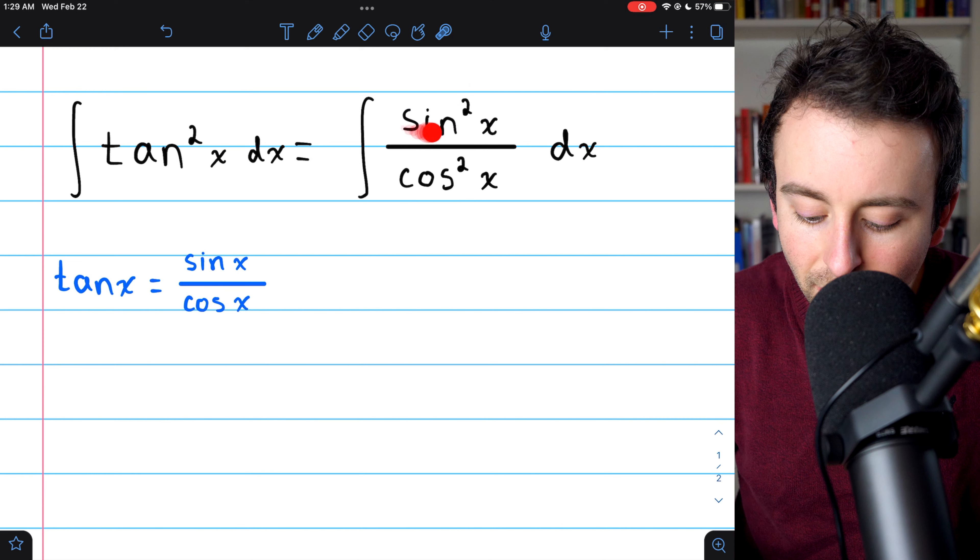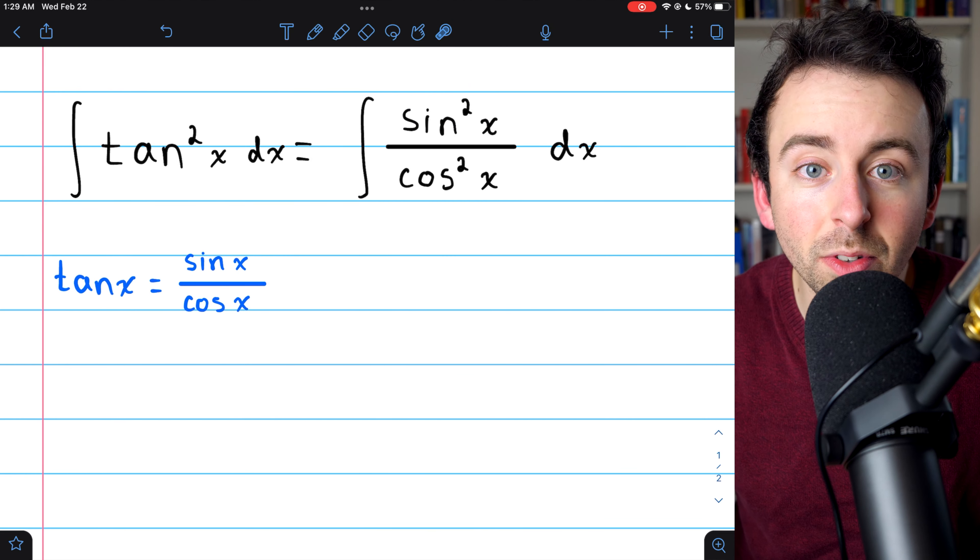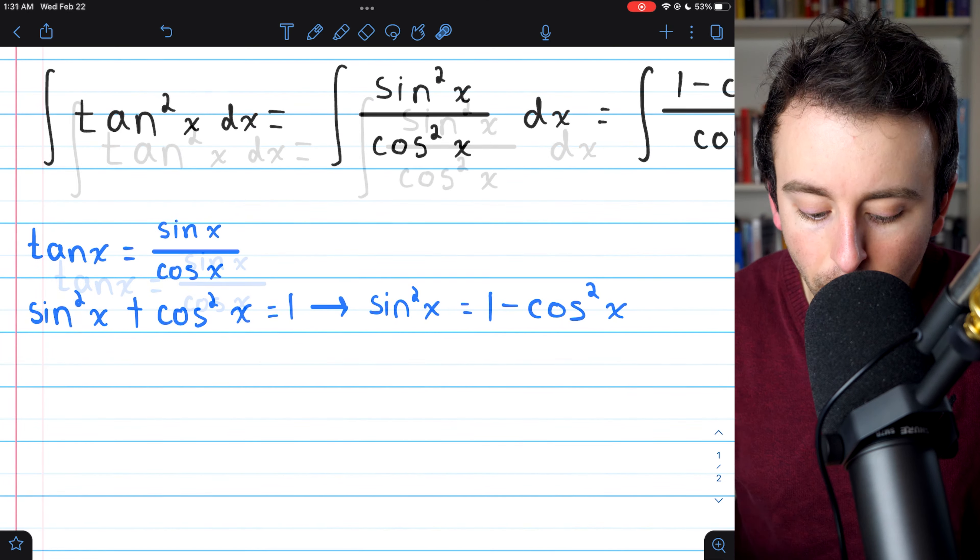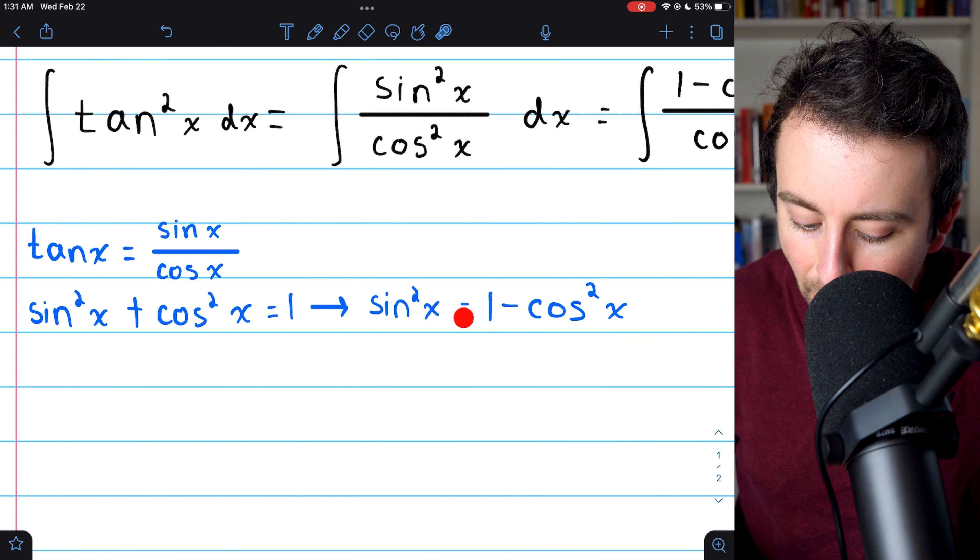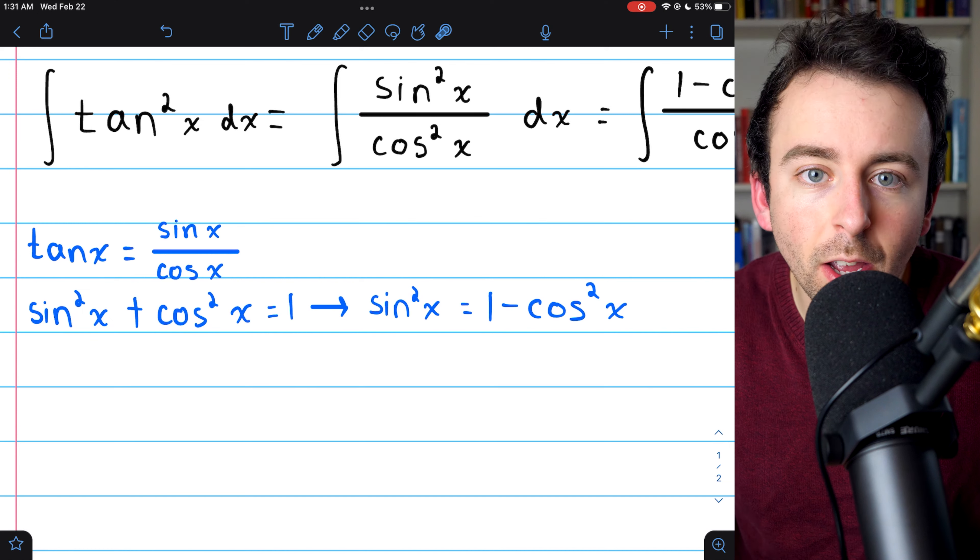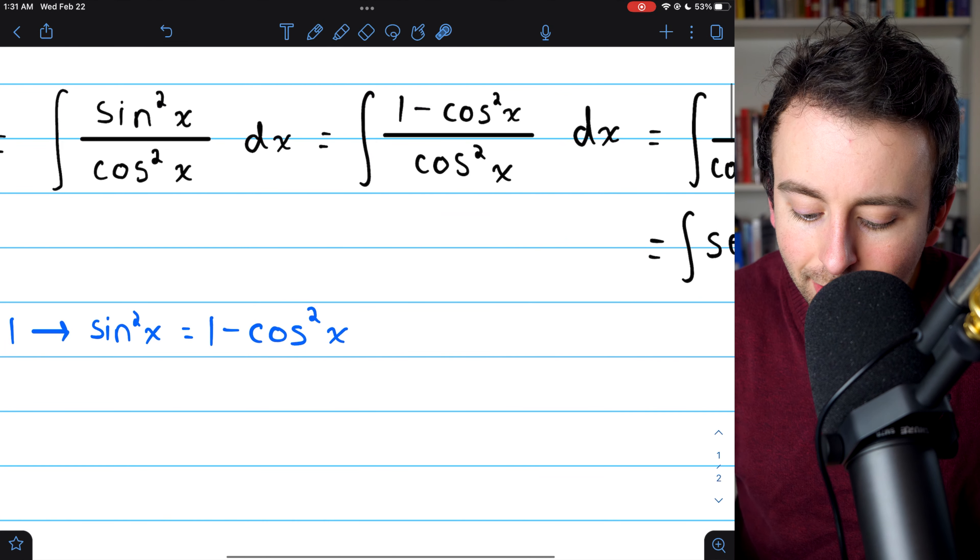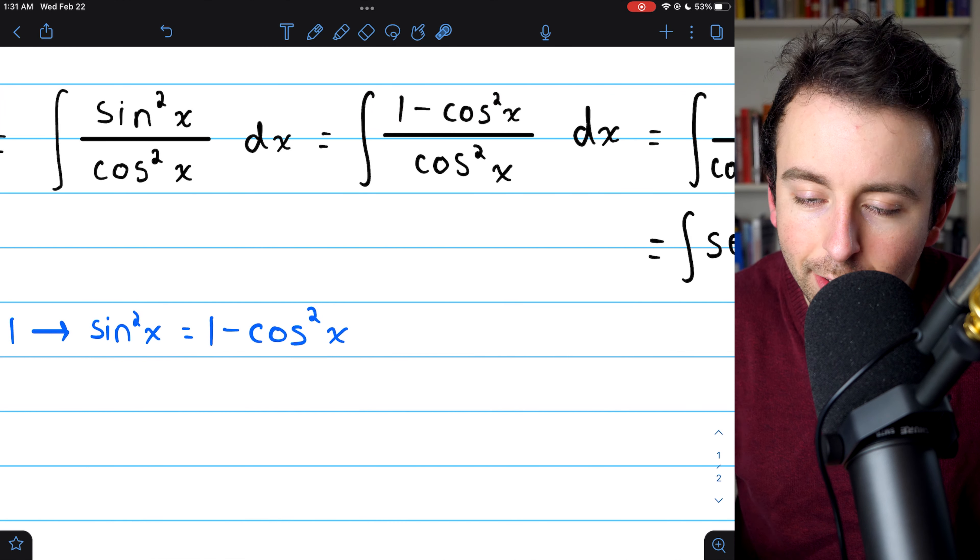So if we replace this sine squared with one minus cosine squared, we'll have something very easy to take care of. So the Pythagorean identity tells us that sine squared equals one minus cosine squared. So here in our integrand, we replace sine squared with one minus cosine squared.